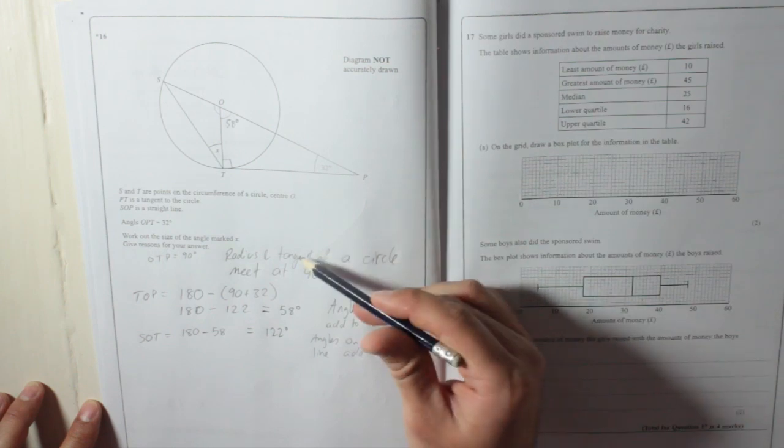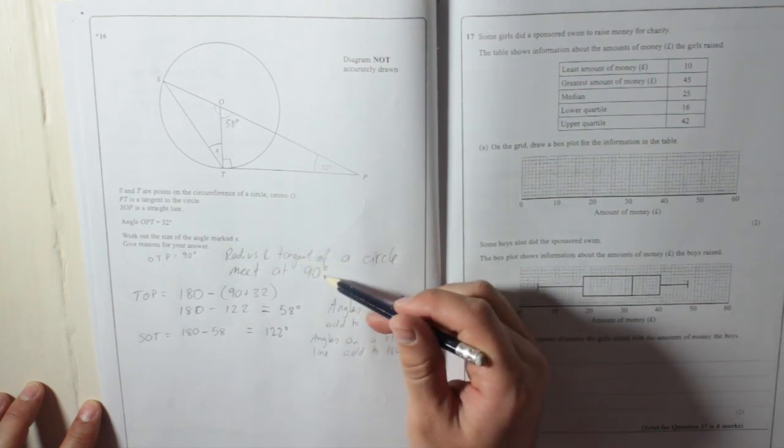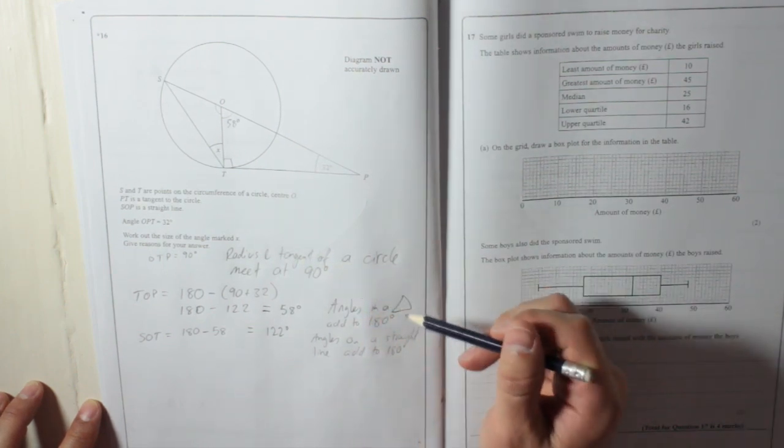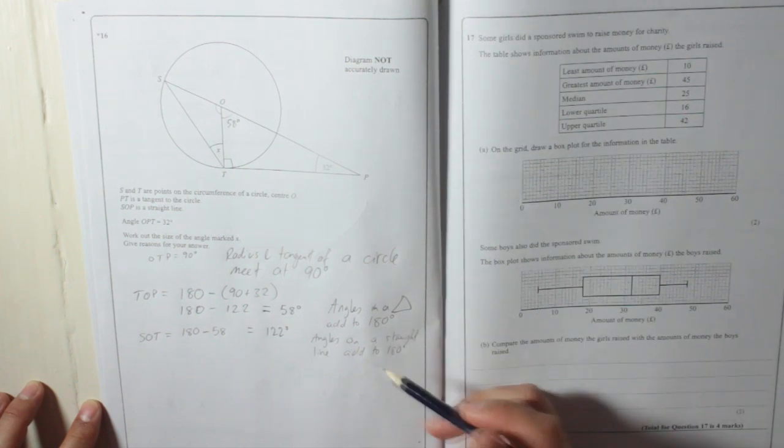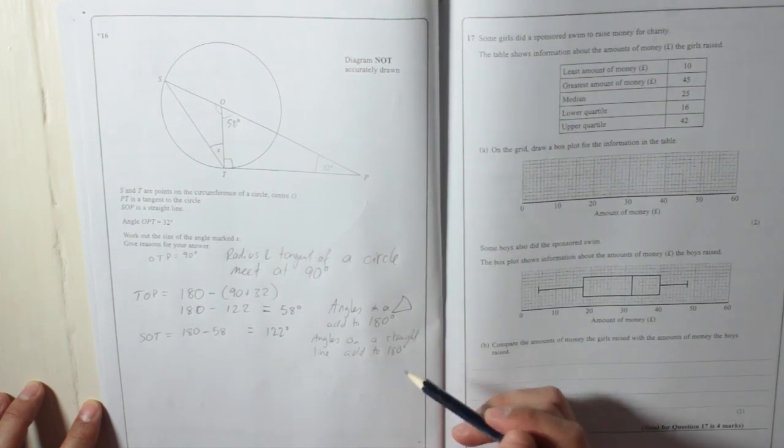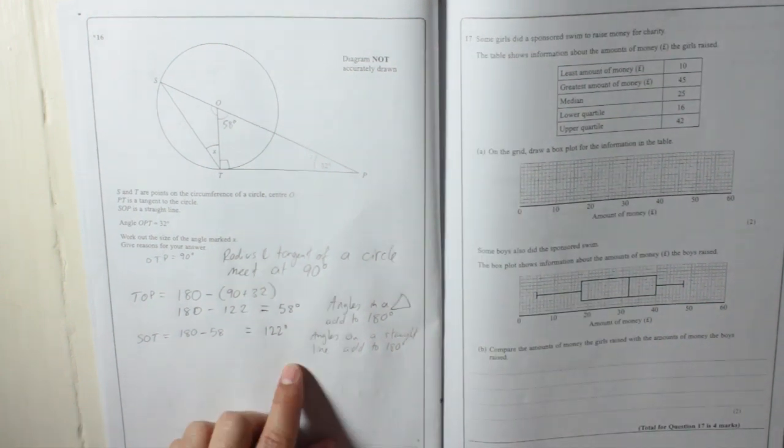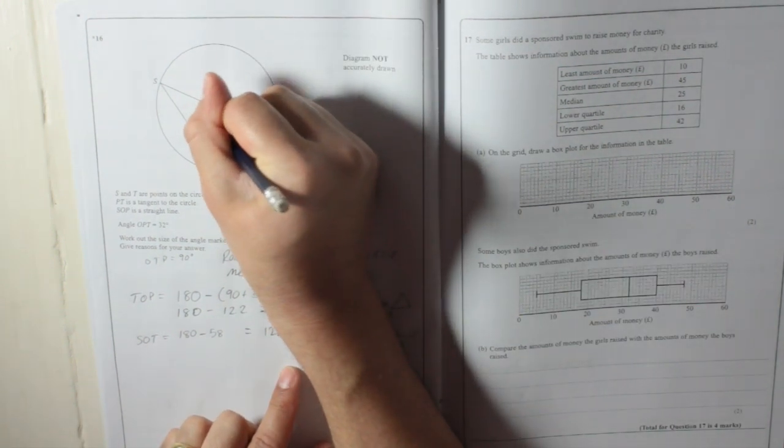So we knew that the radius and the tangent meet at 90 degrees, so you write it down. We knew the angles in a triangle add to 180 degrees, so we write it down. We know the angles in a straight line add to 180 degrees, so we write it down. So S-O-T is 122 degrees.